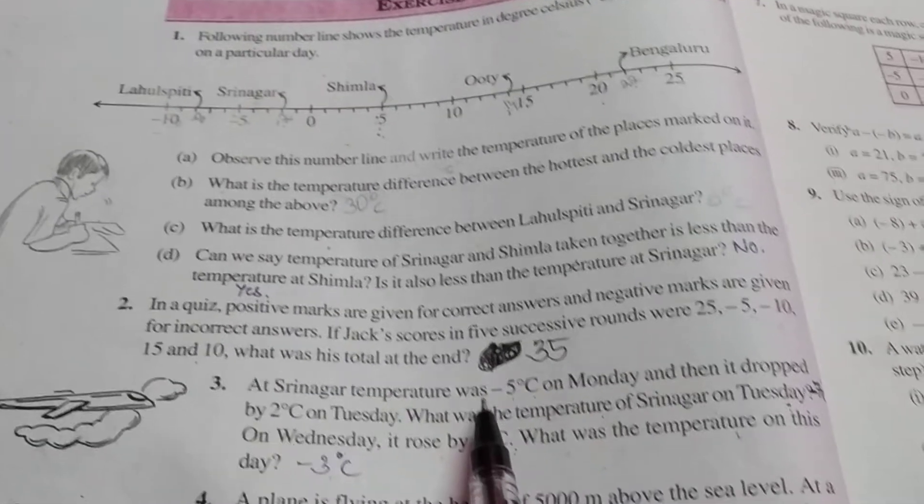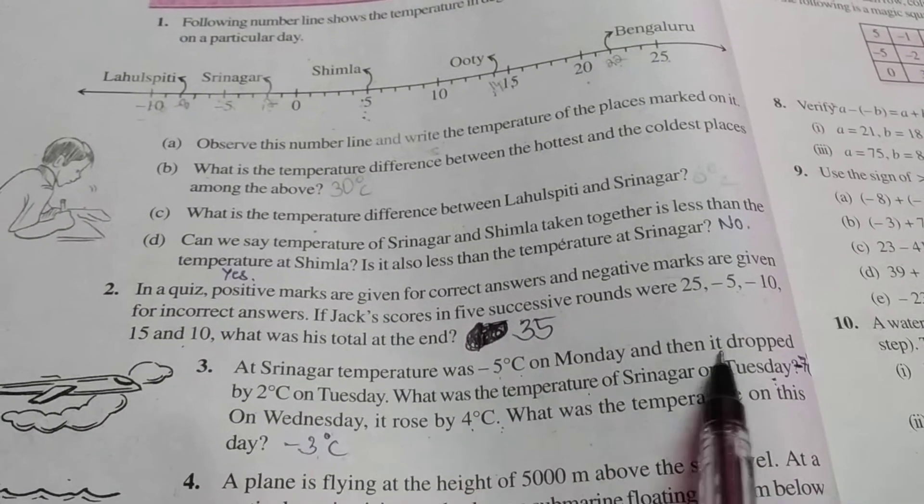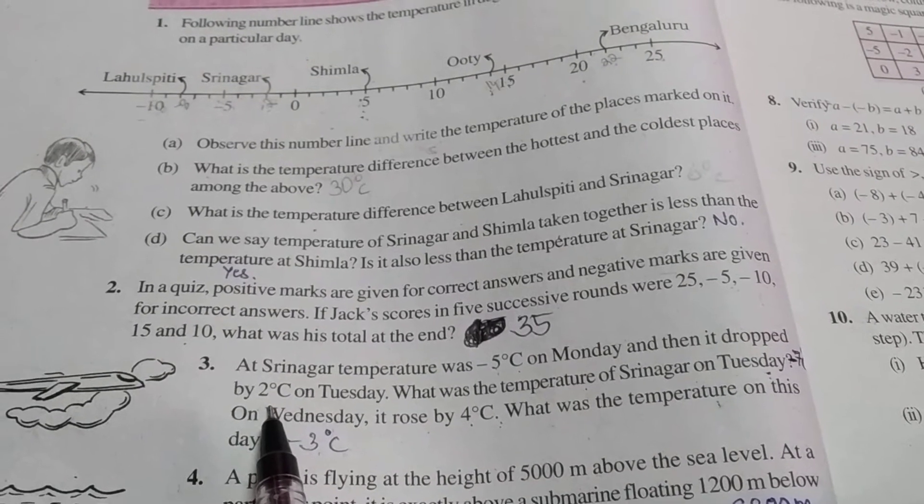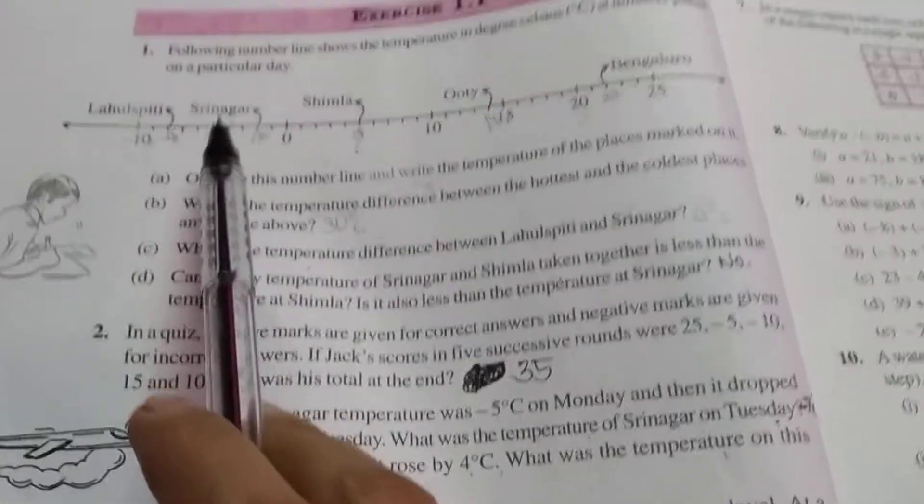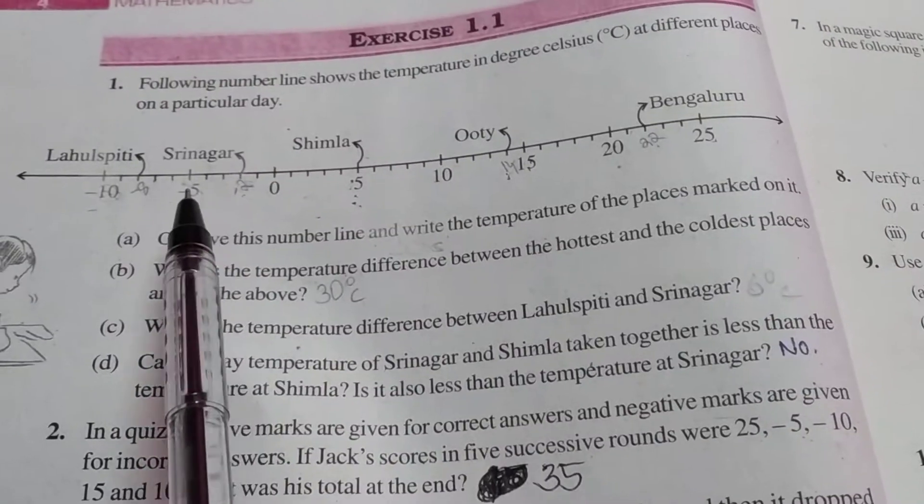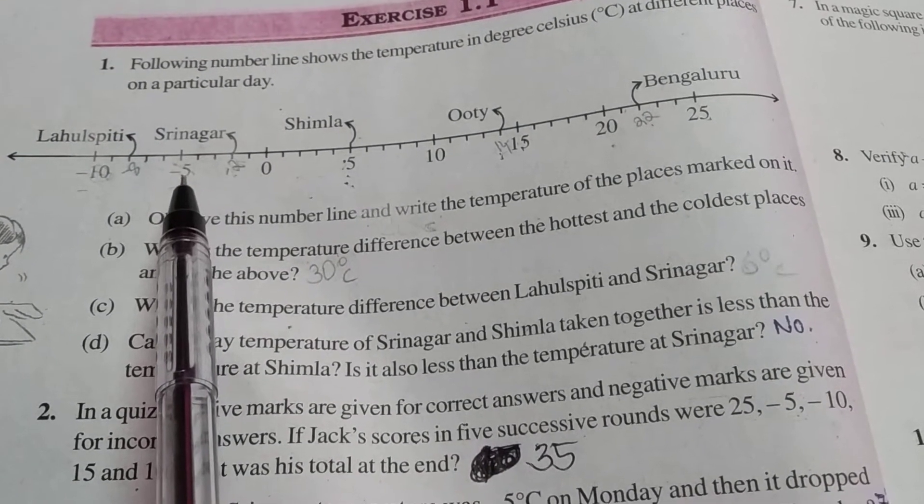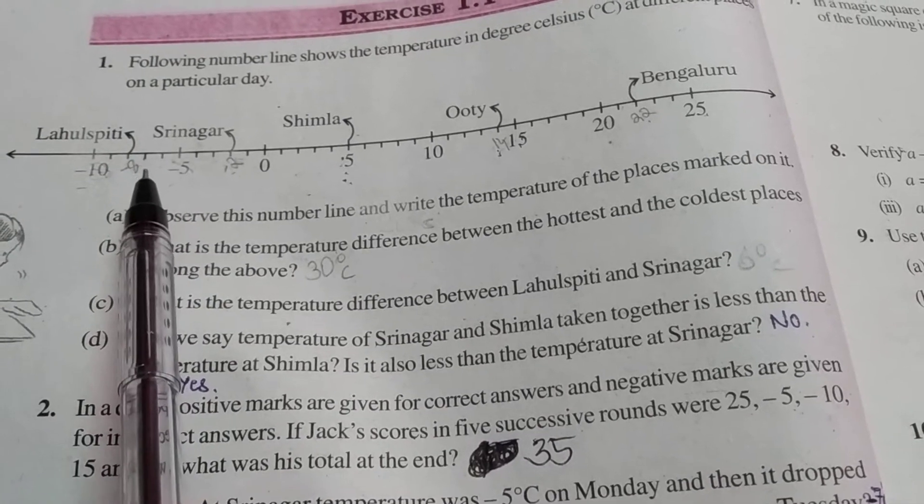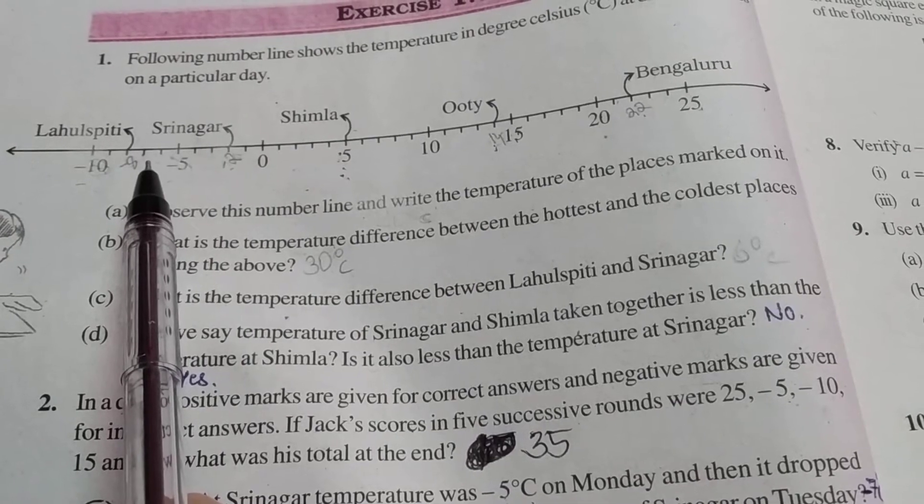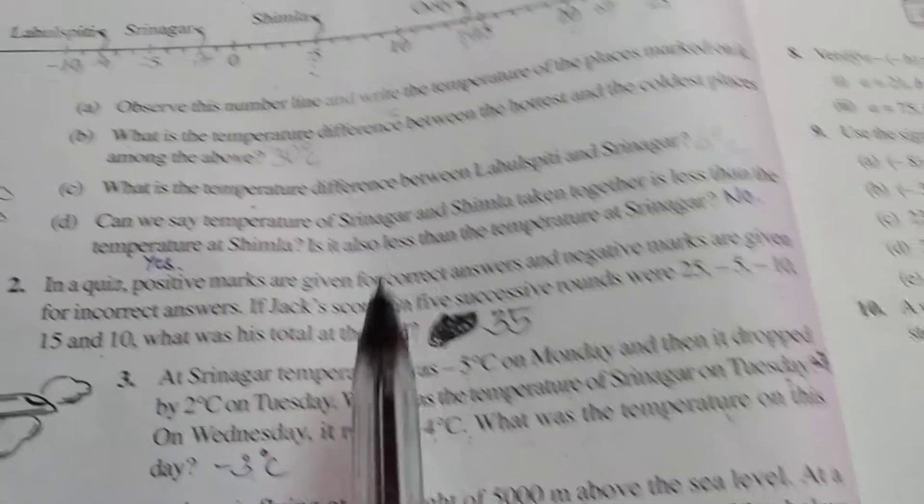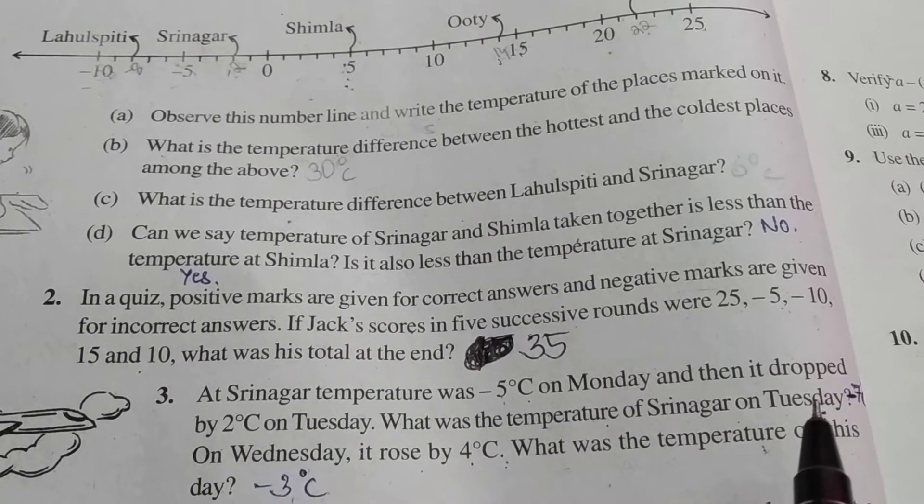So first, Srinagar's temperature was minus 5 degrees Celsius. Then it dropped by 2 degrees. That is, the temperature decreased by 2 degrees Celsius. So you can find here minus 5, then dropped by 2 degrees, so 1, 2. So Srinagar's temperature is minus 7 degrees Celsius on Tuesday.